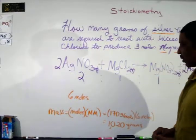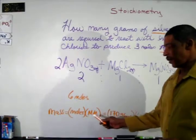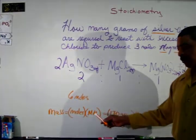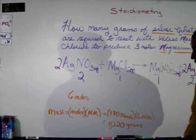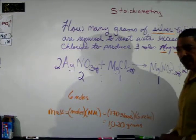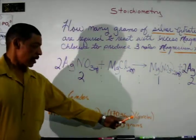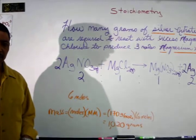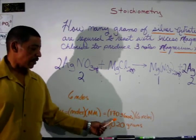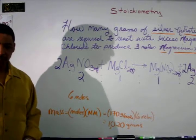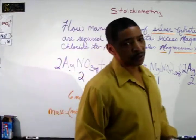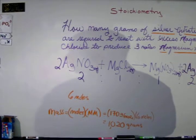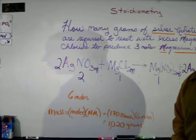Finally, to determine the number of grams required, simply rearrange the mole calculation to find mass. Mass is equal to the number of moles times the molar mass of the compound. It was calculated that 6 moles of silver nitrate is required, and the molar mass of silver nitrate is 170 grams per mole. 170 times 6 equals 1,020 grams. So in order to produce 3 moles of magnesium nitrate, 1,020 grams of silver nitrate is required.